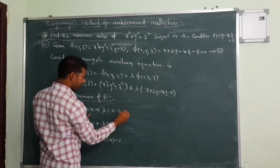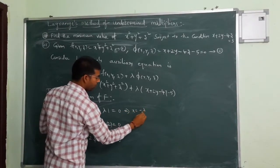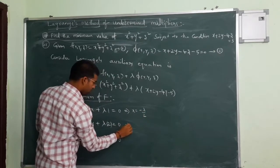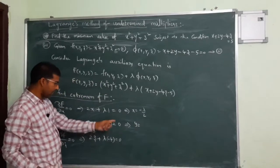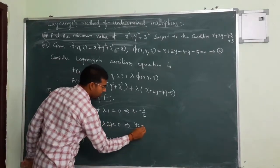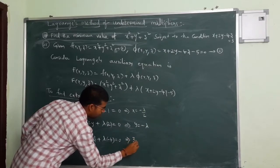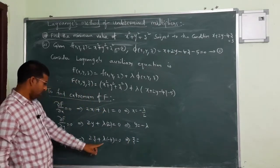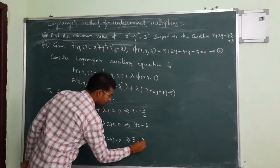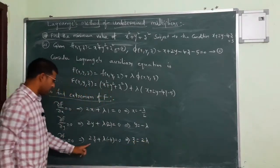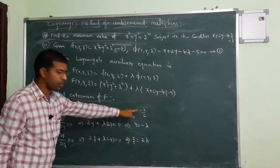From these equations, what is the x value? Minus lambda by 2. From the y equation, 2 gets cancelled so y is nothing but minus lambda. From the z equation, z is plus 2 lambda because the 2 gets cancelled. So we got x, y, z in terms of lambda.